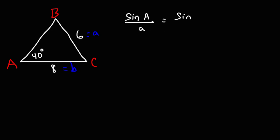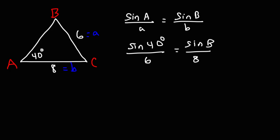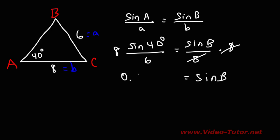We're going to use the first two parts of the Law of Sines formula: sine of angle A over side A is equal to sine of angle B over side B. So angle A is 40, side A is 6, we're looking for angle B, and side B is 8. Instead of cross multiplying, let's multiply both sides by 8. So sine B equals 8 times sine of 40 divided by 6, which gives us sine of B equals 0.85705.